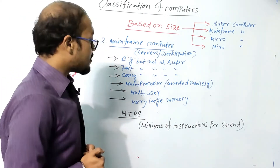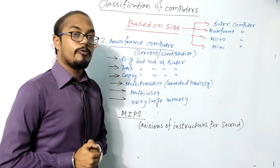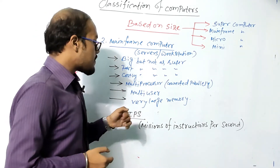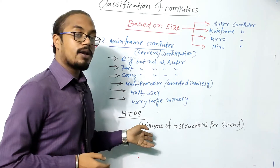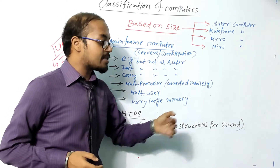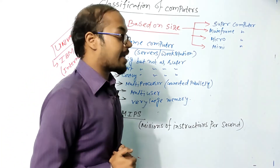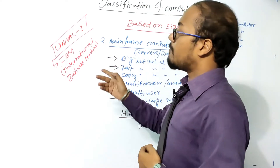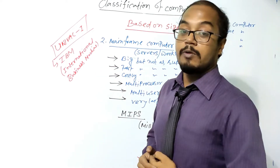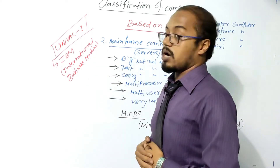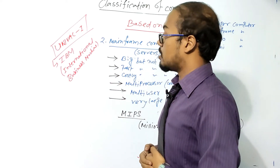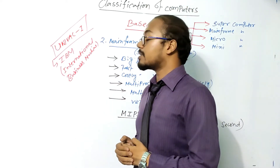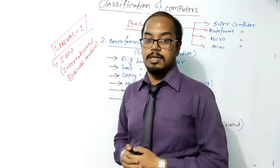Mainframe computers also have very large memory. Their frequency unit is MIPS — Millions of Instructions Per Second. The first mainframe computer in the world was UNIVAC-1, developed by IBM — International Business Machine.